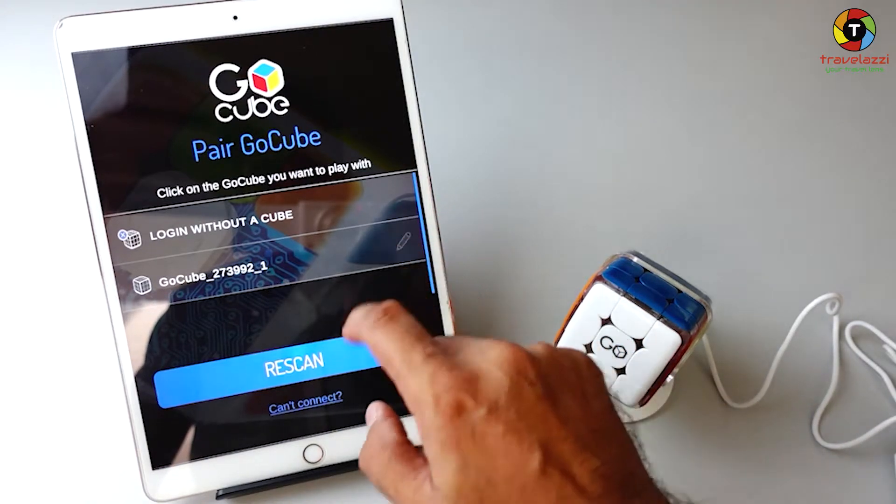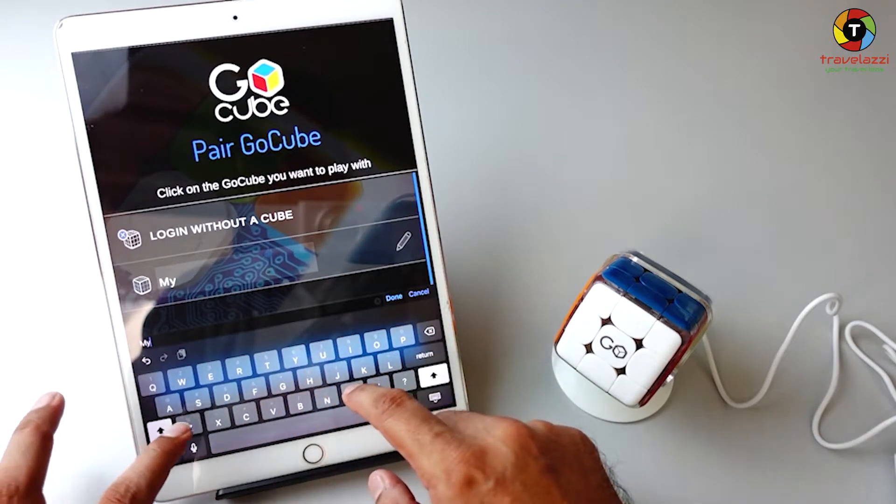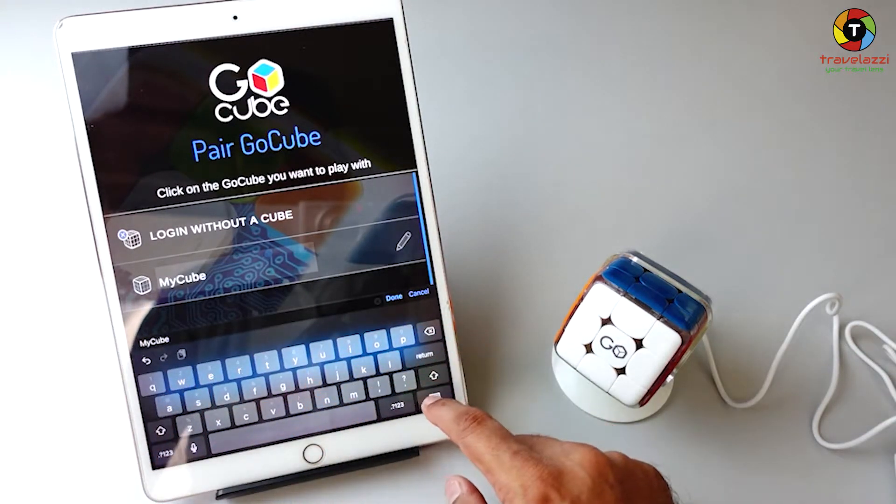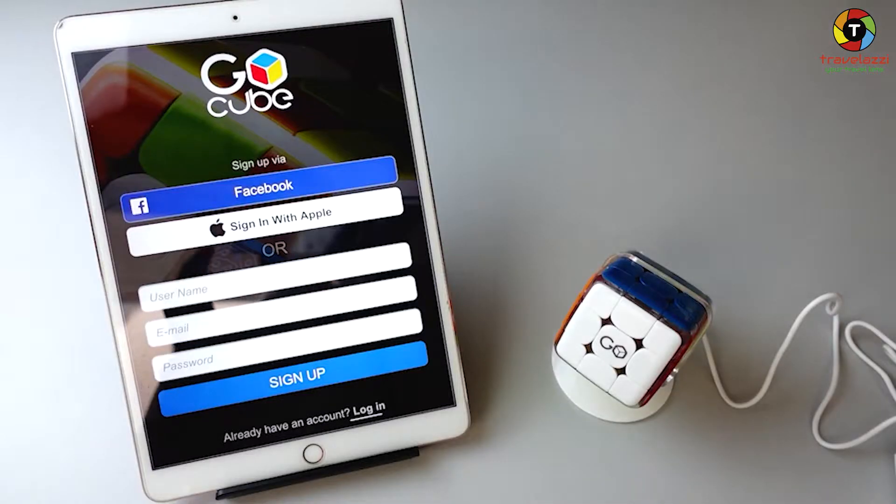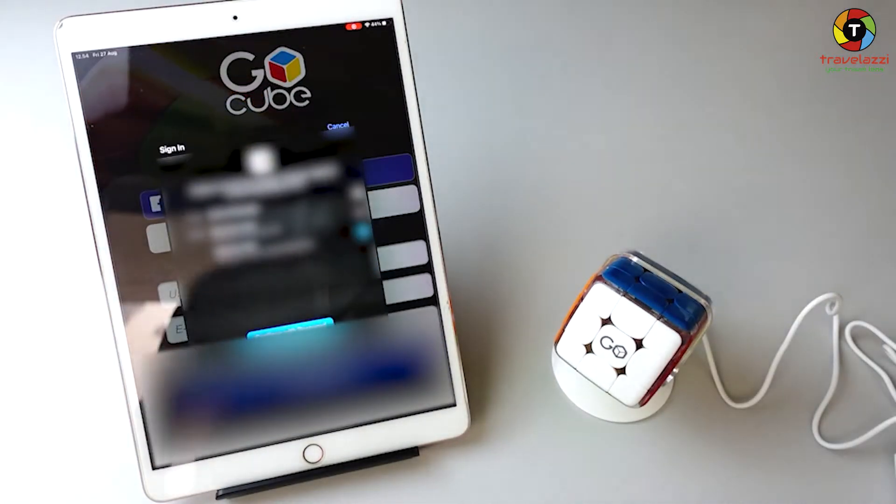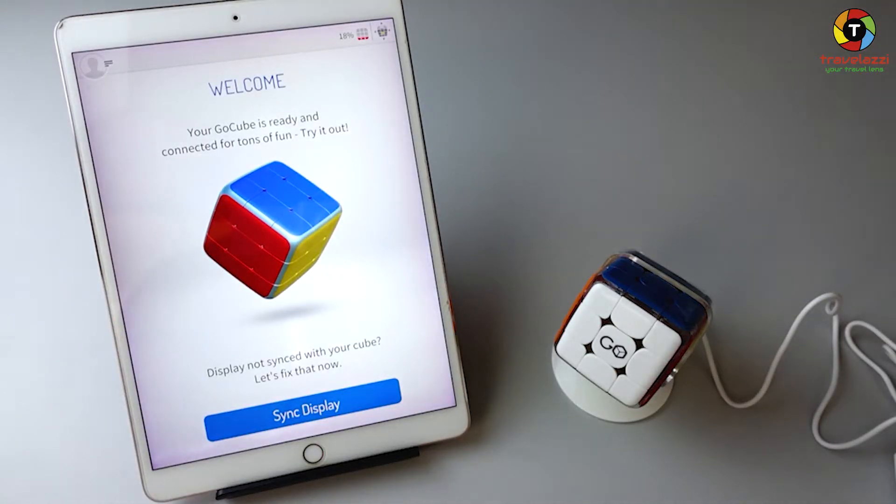Let me just change the name to My Cube. We just click on it. In this step you have to create a Go Cube account through which you will be connecting with the application. Now your Go Cube is connected. It says your Go Cube is ready and connected for tons of fun.